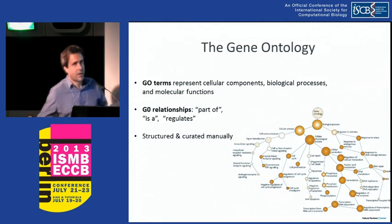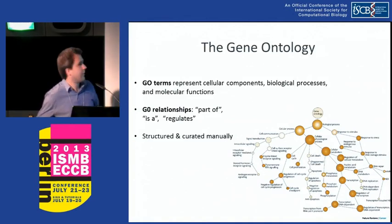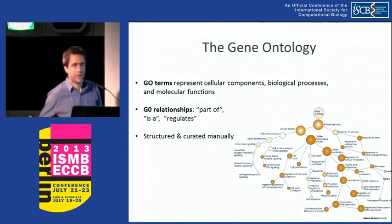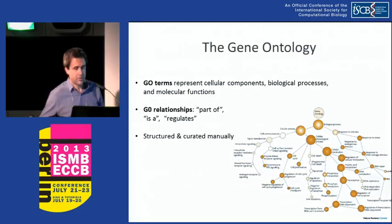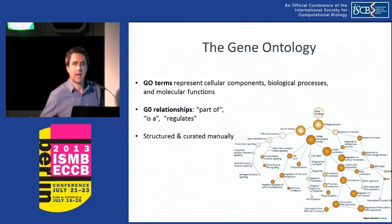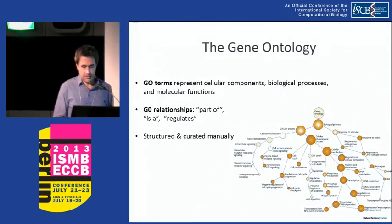In the Gene Ontology, it's a DAG-structured hierarchy in which the nodes represent cellular components, biological processes, and molecular functions, and edges represent relationships between terms such as 'part of', 'is a', or 'regulates', depending on which ontology and which type of relationship we're looking at. The Gene Ontology is by many considered a gold standard — it's used throughout many different genomics analyses, and it's hard to find a paper without use of the Gene Ontology or an EGO resource.